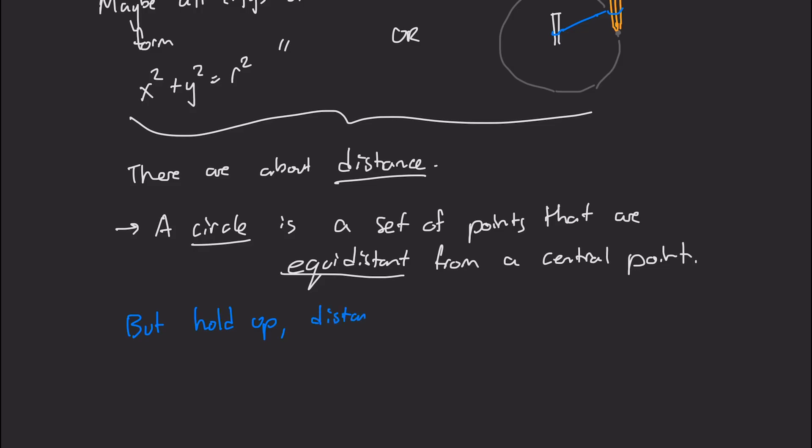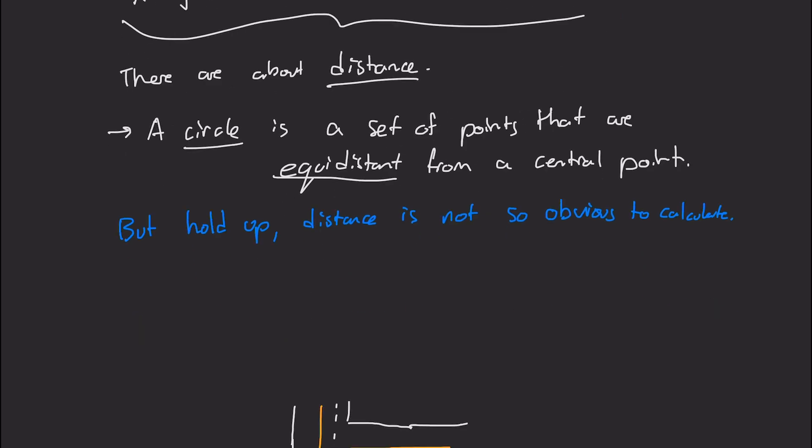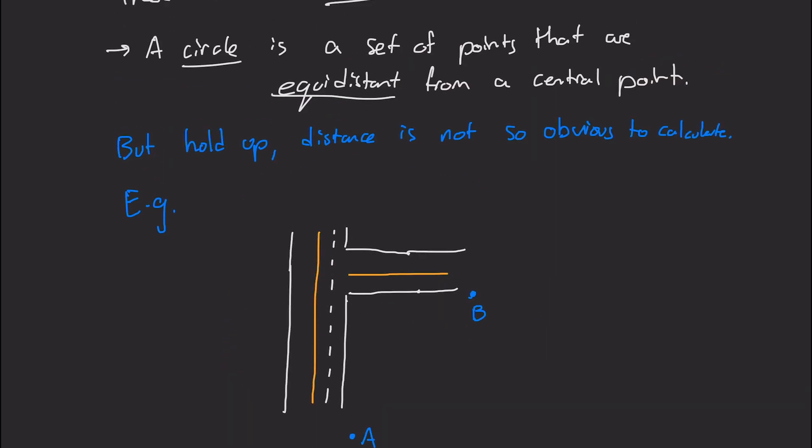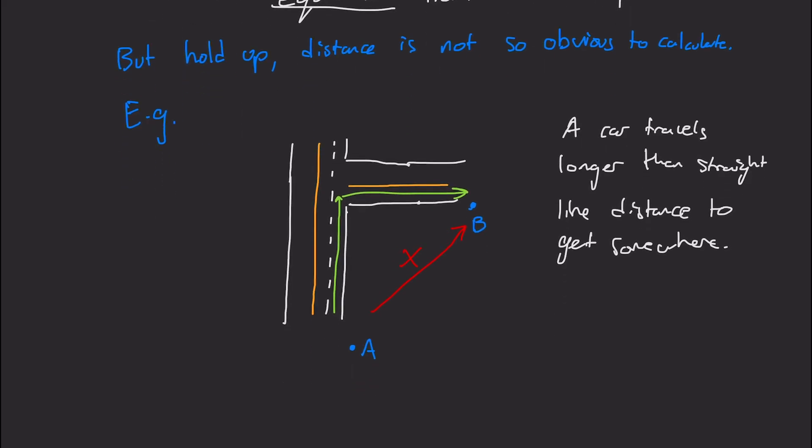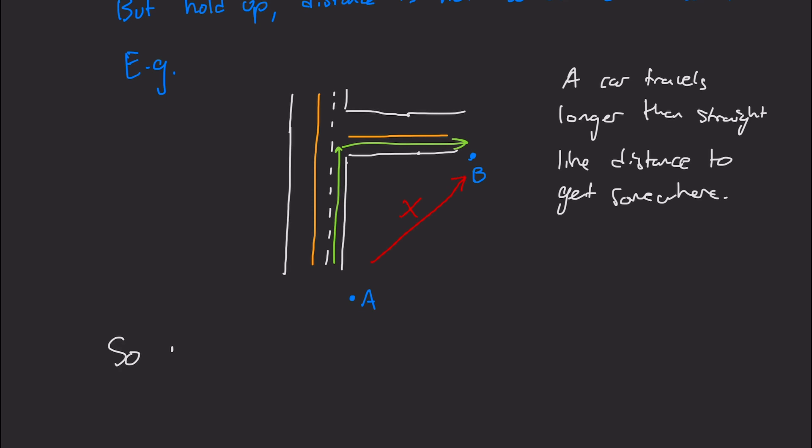So I'm going to define a circle to be a set of points that are equidistant from a central point. But hold up, a distance isn't so obvious to calculate. For example, if you're driving in your car, we can't always take the straight line path between two points. We have to follow the road. While that might seem like a trivial observation, that certainly matters for your wallet when you're paying for gas. Your odometer doesn't care about the straight line distance. It only cares about the distance along the road. So that begs the question, what is distance?